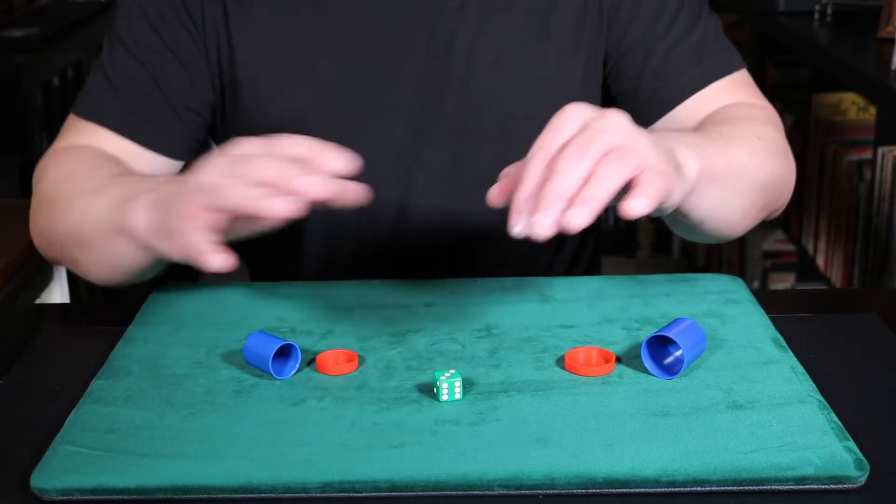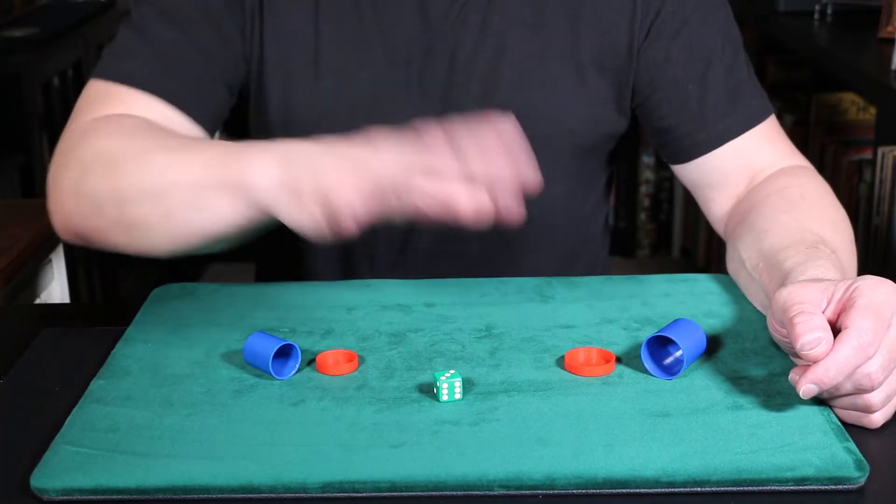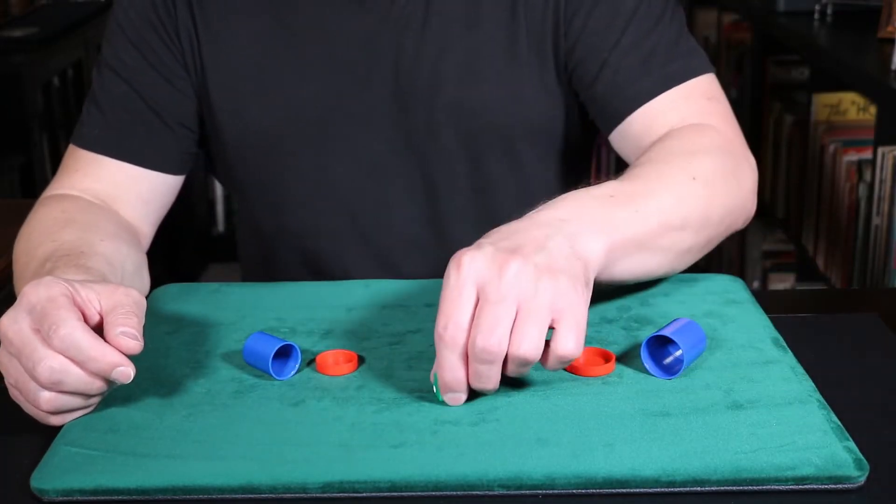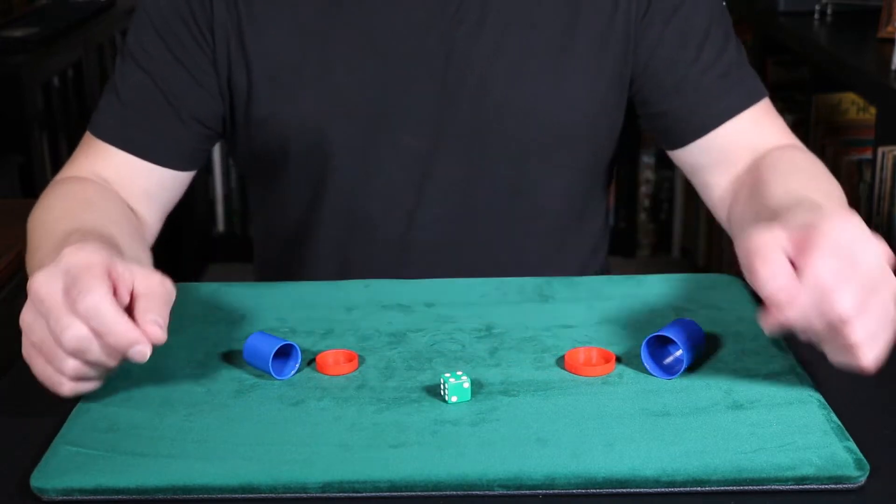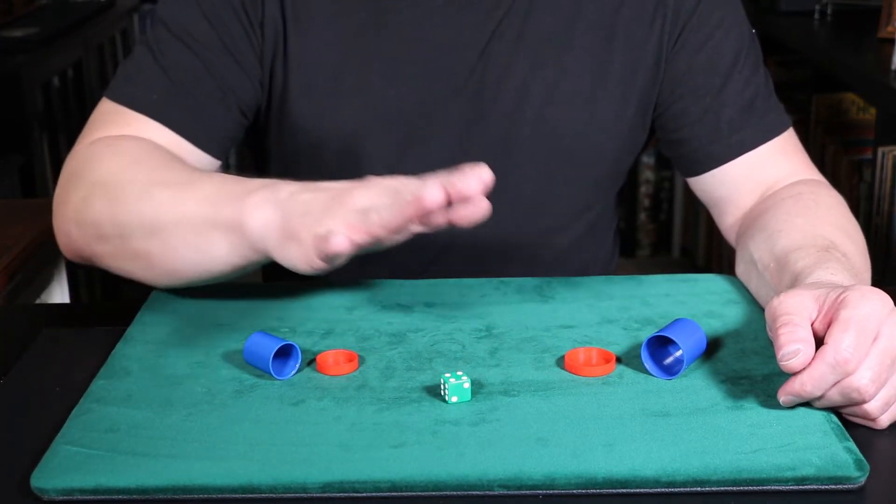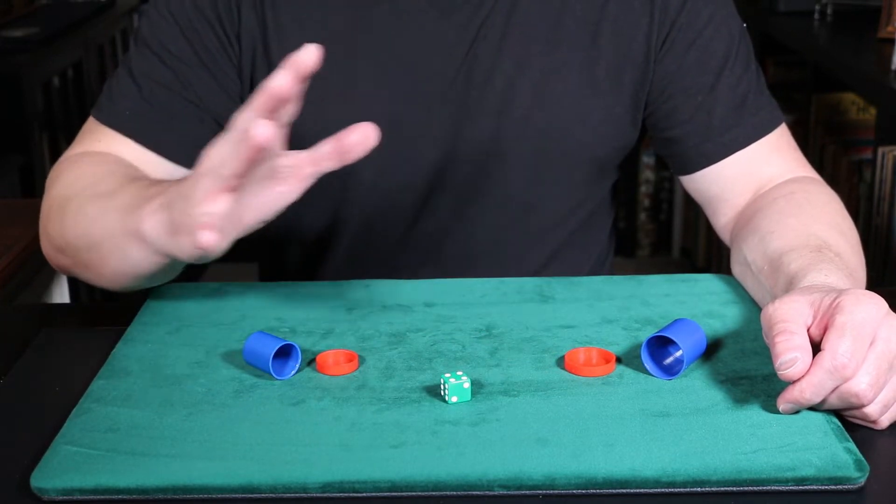So what I'm going to ask you to do is think of any number on this die. Now, as you know, a die has six numbers, one through six. So think of a number from one through six, and don't tell me what it is. Think of it right now.